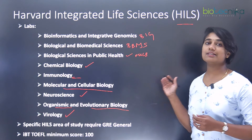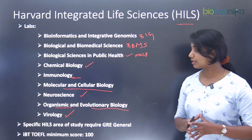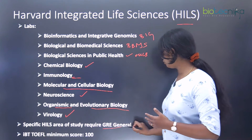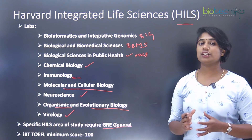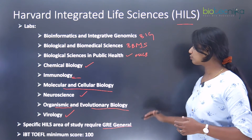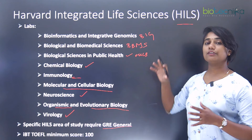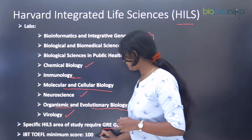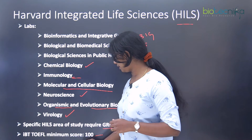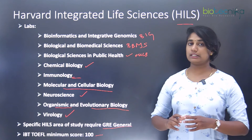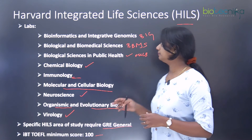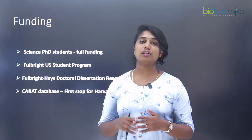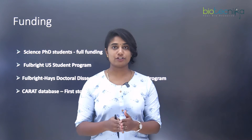If you want to get into any of these HILS labs, a few require the GRE general score, so go to the specific websites and check. The TOEFL minimum score has to be 100 and the IELTS minimum has to be 7, just as we saw in DMS. These are the different labs available for a bioscience or life science student doing a PhD at Harvard.